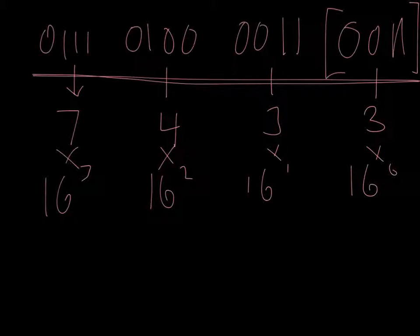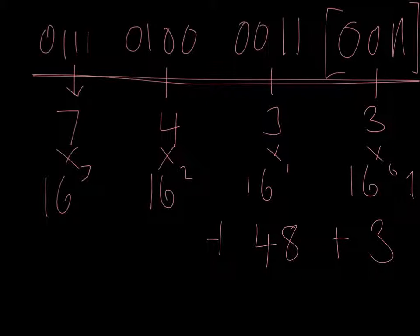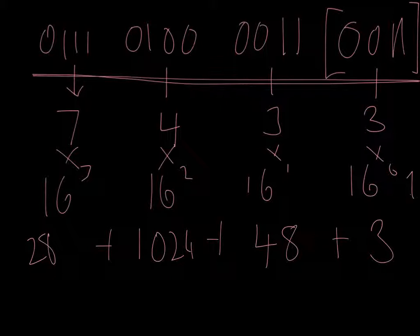So that's 16 to the power 0. Hopefully you'll know as 1 and 3 times 1 is 3. Then we take 16 to the power 1 to give us 16 multiplied by 3 gives us 48. And then we take 16 to the power 2 to give us 256 multiplied by the 4 gives us 1024.